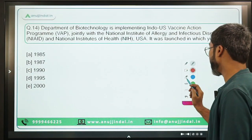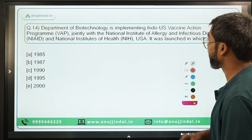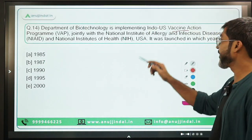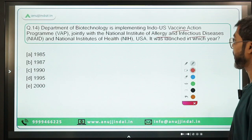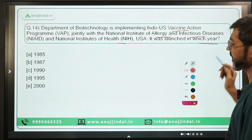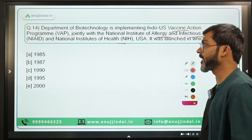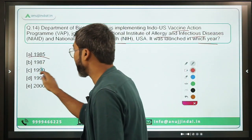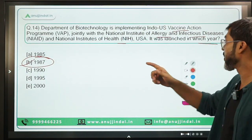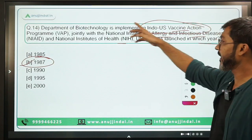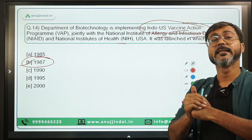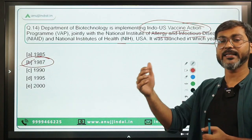Question 14: The Department of Biotechnology is implementing the Indo-US Vaccine Action Program jointly with the National Institute of Allergy and Infectious Diseases and National Institute of Health of USA. It was launched way back in the year 1987. Option B is the correct answer. Under this program, both countries collaborate in the development and exchange of vaccines.